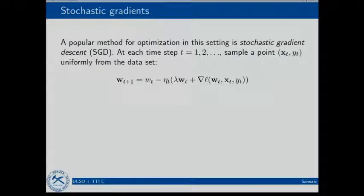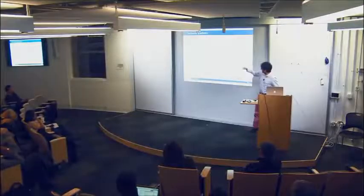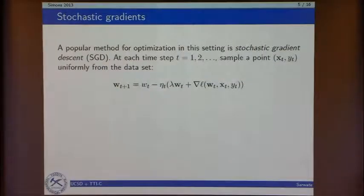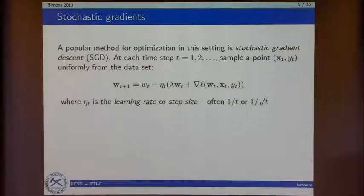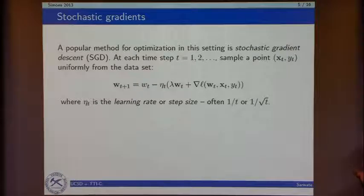We often solve this problem using gradient descent, but when n is very large we have to compute n gradients, which is pretty difficult. So people do stochastic gradient descent: I have my n data points, pick one at random, and do a gradient step with respect to that one data point, iteratively. My estimate wt+1 equals my old estimate minus a gradient step — the gradient of the loss evaluated at that one point, plus regularization with lambda. The learning rate eta_t is set to something like 1/t, or constant/t, or constant/sqrt(t).